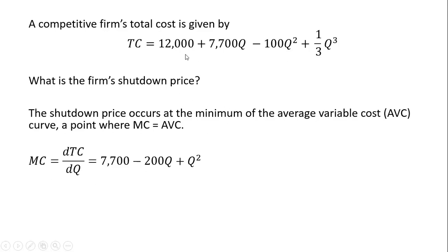The marginal cost is the derivative of the total cost equation up here. So the derivative of this equation will be as follows. We take the derivative of 12,000, that's just a constant or zero. The derivative of 7,700Q is just 7,700. And the derivative of minus 100Q squared, bring down the 2 in front, we're going to get minus 200Q.